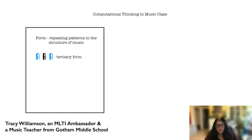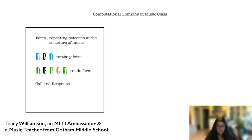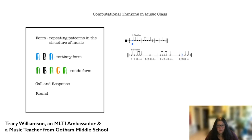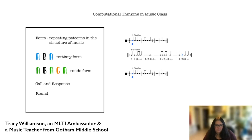Once students have an understanding of rhythmic notation, they have the opportunity to compose their own pieces. We do these compositions in basic tertiary form, or ABA form. Most music has some kind of form where sections of the piece repeat or relate to each other. Students start learning form in elementary school with call-and-response songs or rounds, then we add more complicated form as we progress. They need a series of notes equaling four measures for the A section, then a contrasting B section, and then repeat the original series to create the ABA form. Once they compose and practice, they perform their compositions live with a group.